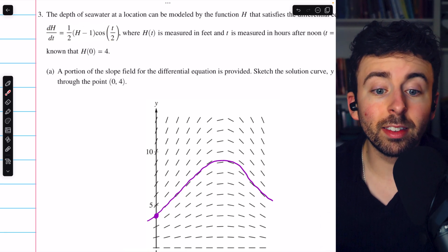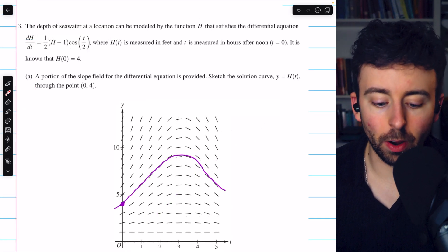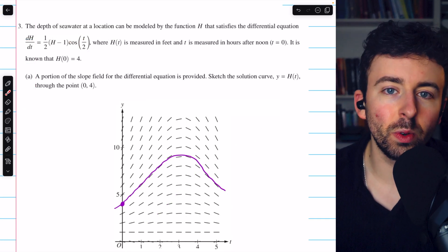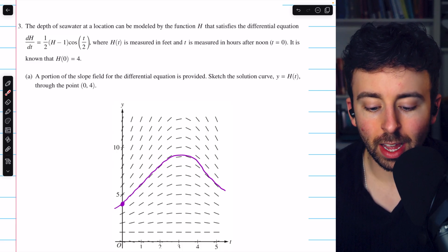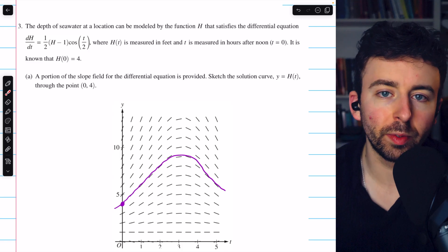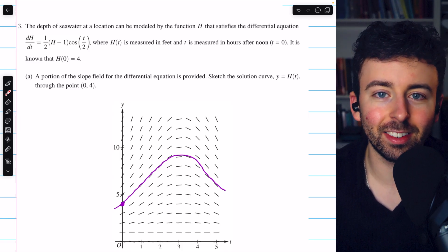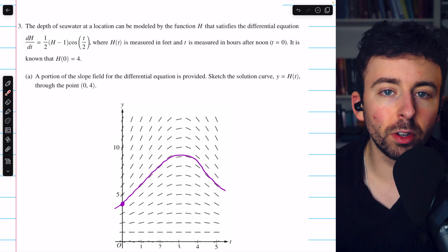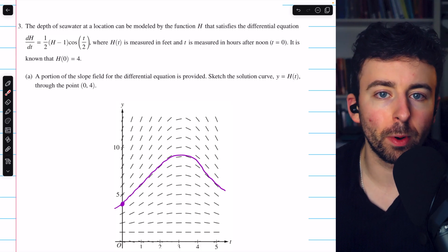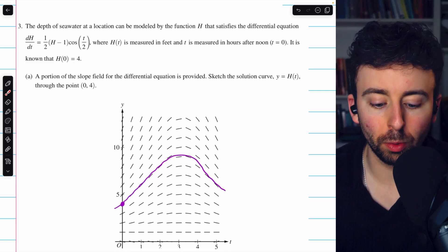First, is there anywhere that this derivative doesn't exist? The answer to that is no. Cosine is a nice continuous function on all real numbers, and we don't know anything about the function h that would suggest it doesn't exist somewhere either. So the derivative exists everywhere for our purpose. So then we just have to ask, where is it equal to zero? Those will be the critical points.